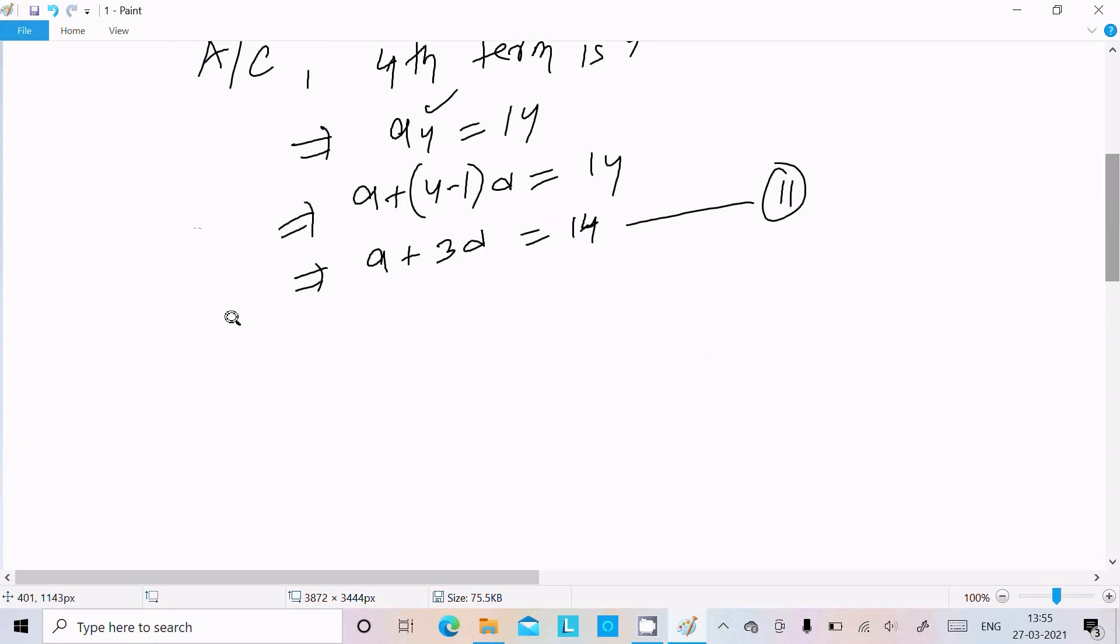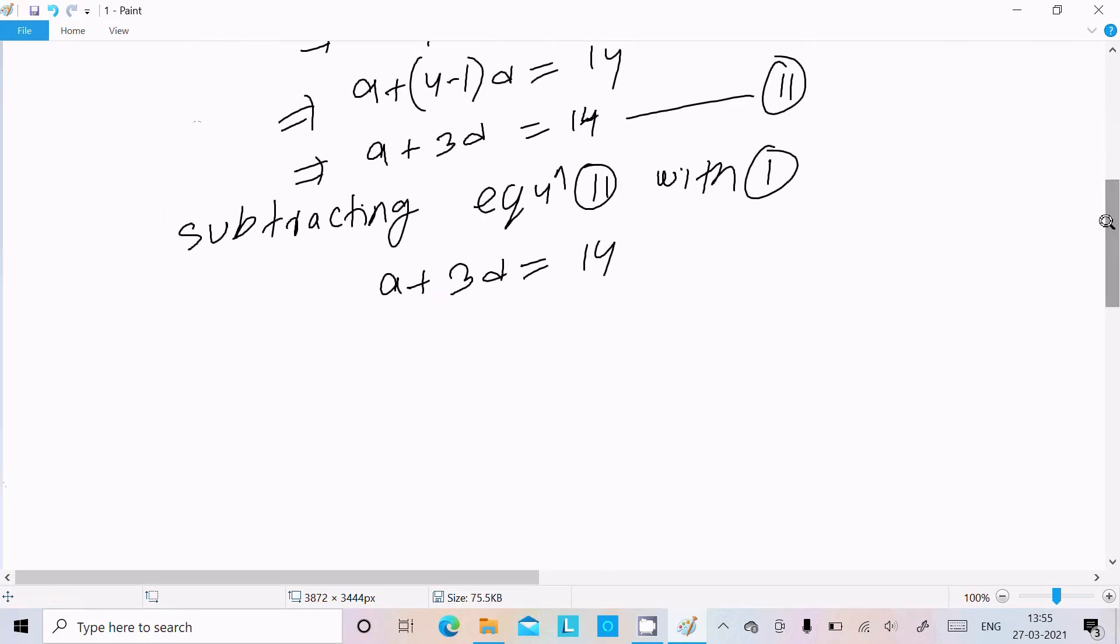Now, subtracting equation 1 from equation 2: a + 3d = 14 and a + d = 8. Subtracting these, the a cancels out. 3d - d = 2d, and 14 - 8 = 6.